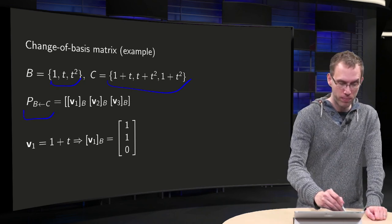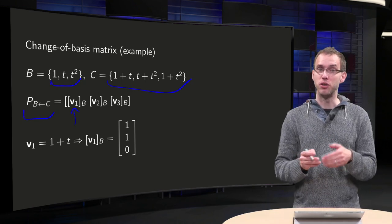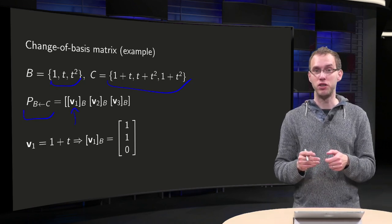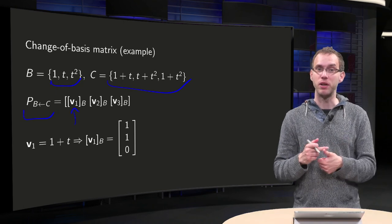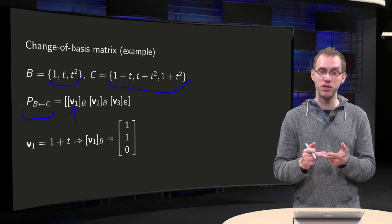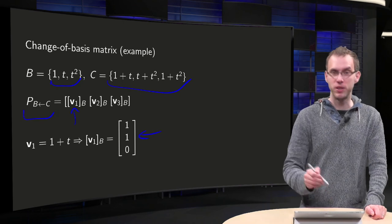Because V1 in the basis B is just 1 plus t in terms of 1, t and t squared, well that needs coefficients 1, 1 and 0. 1 times 1 plus 1 times t plus 0 times t squared, so V1 in B is just 1, 1, 0.